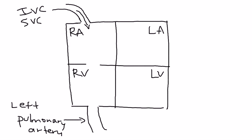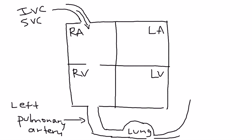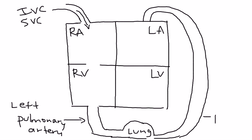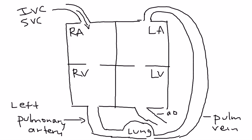Patent ductus arteriosus involves a connection between the pulmonary artery and something else — in particular, the left pulmonary artery. Then you get to the lung, and from there you have the pulmonary vein. Finally, coming out of the heart is a very big vessel known as the aorta.